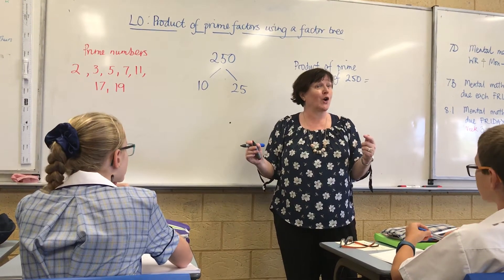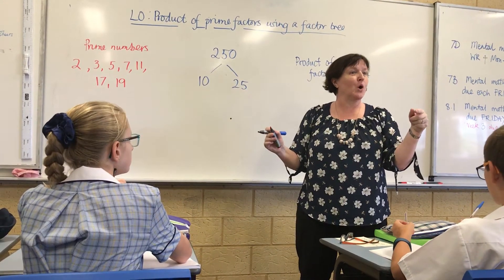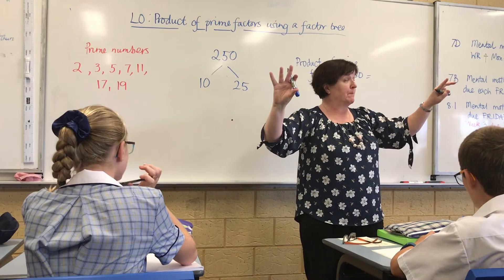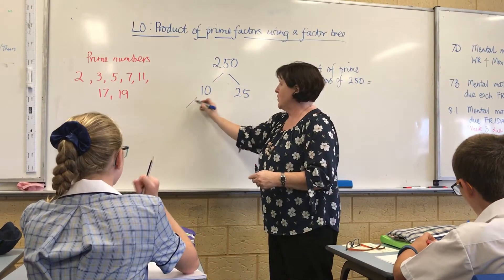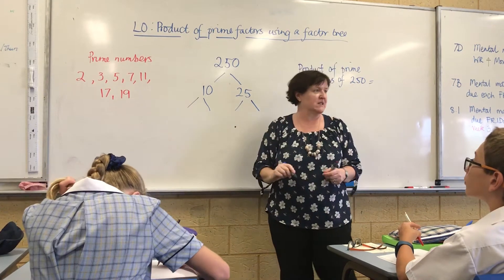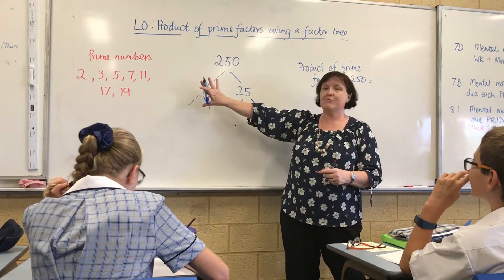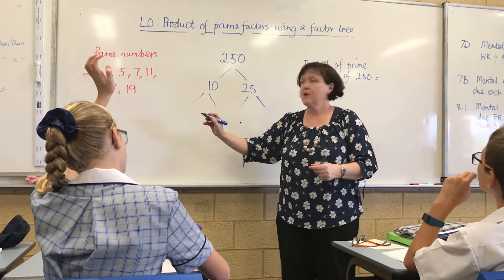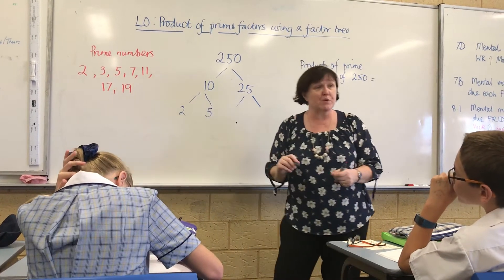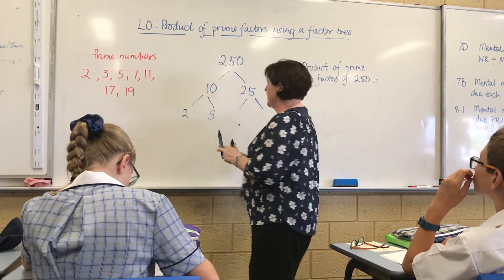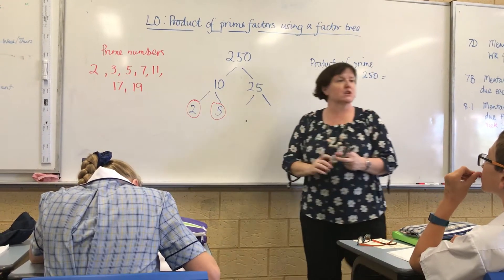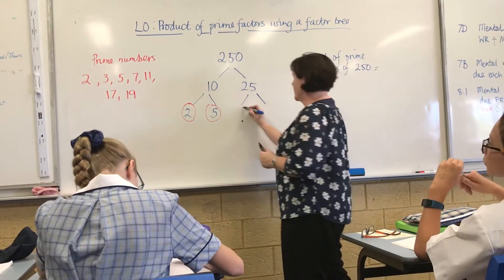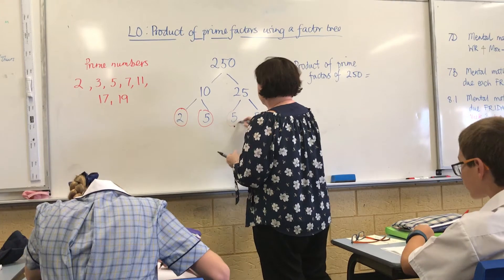They're not prime — they're composite. When you've got two composite numbers, you have to give each one its own branches. Two numbers that multiply to make 10: 2 times 5 — and those branches are finished because they're prime. And two numbers that make 25 when you multiply them: 5 and 5. They're both primes as well.